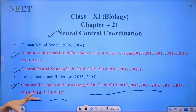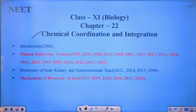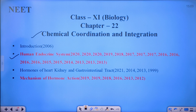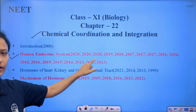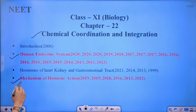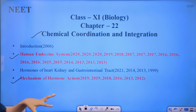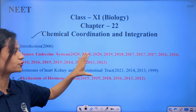Next chapter: Chemical Coordination and Integration. The important topic is the human endocrine system — the hormone system. Questions come very frequently from this chapter. The mechanism of hormone action is also important, with many questions asked on how hormones work. These are key topics from a NEET point of view.